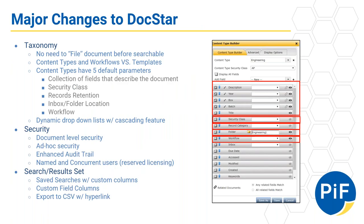A major change is around the taxonomy — the ability to take a template. Now we refer to templates really as workflows. Content types are essentially what gets set up first. The content type — like AP invoice, correspondence, contract — then has five different pieces to it, one being the workflow. In the past you would select a template; now you select the content type, and the content type delineates any pre or post workflows that would occur on that document.